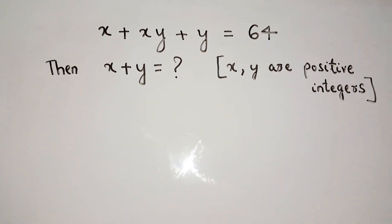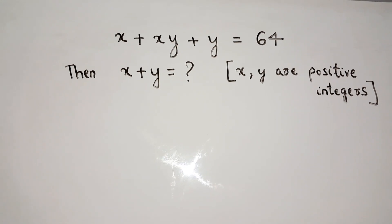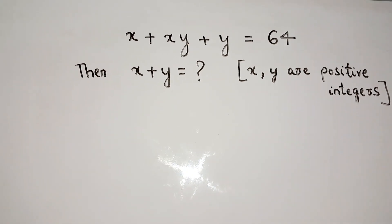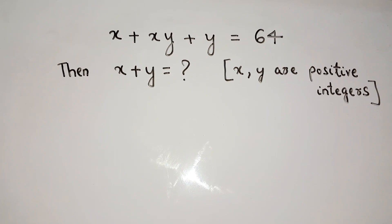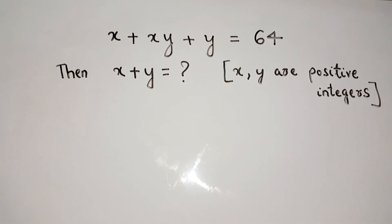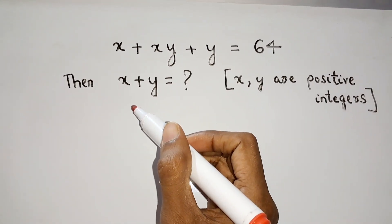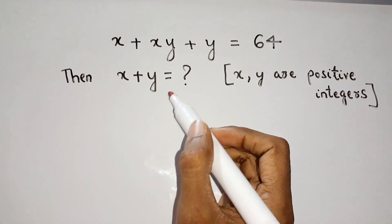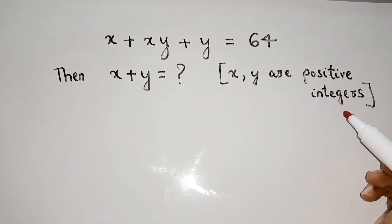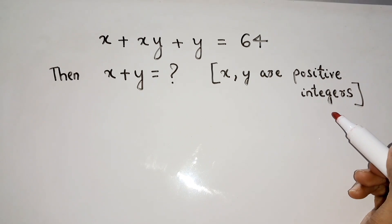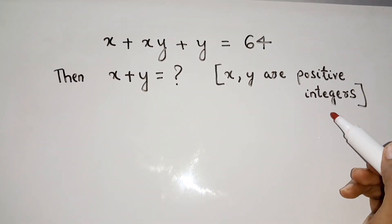Hello everyone. Today we are going to solve one very interesting equation: x plus xy plus y equals 64. We have to find the solution x plus y, where x and y are positive integers. So we have to seek the solution in terms of positive integers only.